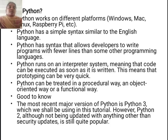Python works on different platforms like Windows, Macs, Linux, Raspberry Pi, etc. Python has a simple syntax similar to the English language. Python has syntax that allows developers to write programs with fewer lines than some other programming languages. Python runs on an interpreter system, meaning that code can be executed as soon as it is written. Python can be treated in a procedural way, an object-oriented way, or a functional way.